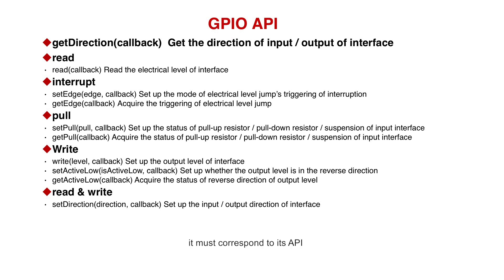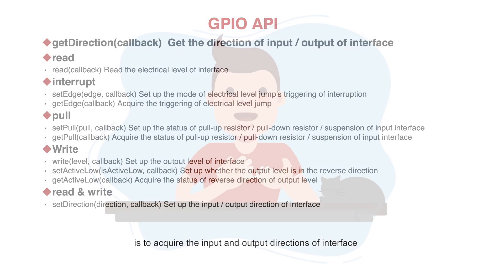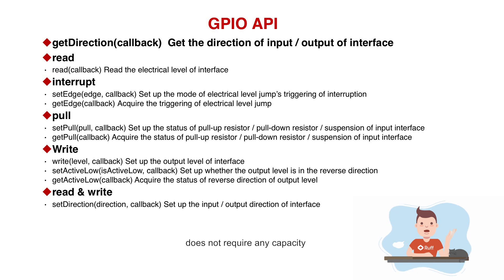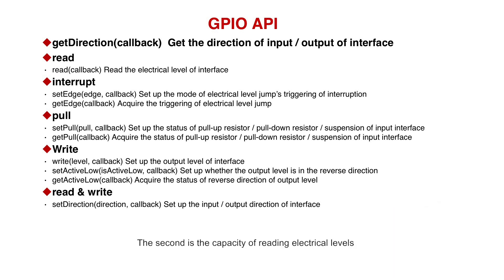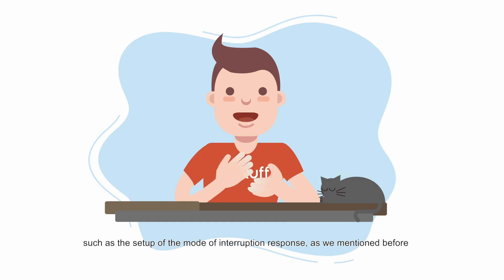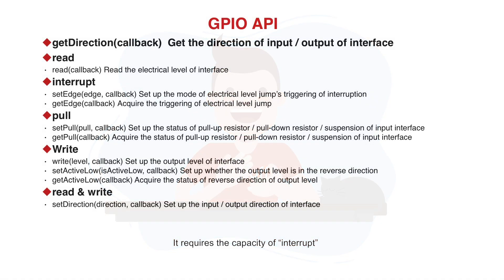With these GPIO capacities, each must correspond to its API. These APIs are categorized according to capacities. First, a universal API is to acquire the input and output direction of the interface, and calling this API does not require any capacity. The second is the capacity of reading electrical levels — the read API — which requires the interface to have the read capacity so that it can be called. The third is the setup of edges, such as the setup of the interruption response mode, which requires the interrupt capacity so that you can call setEdge or getEdge APIs.